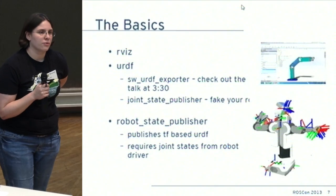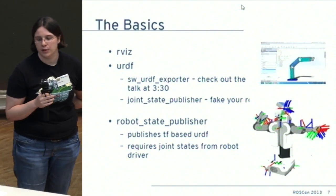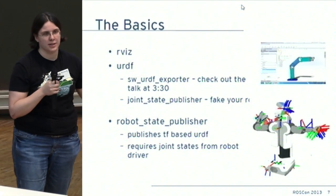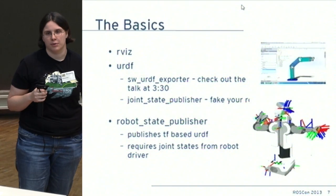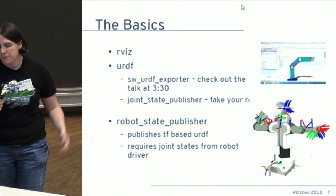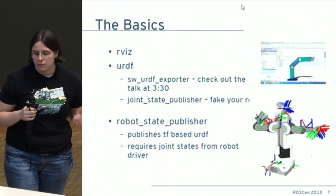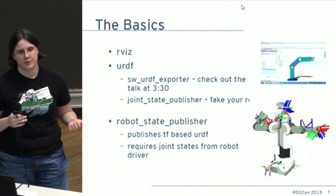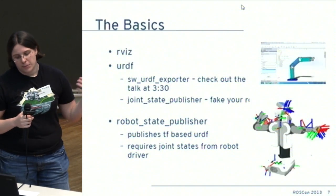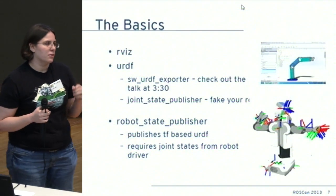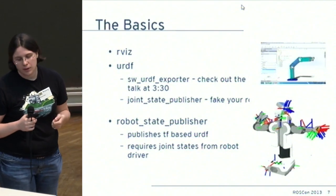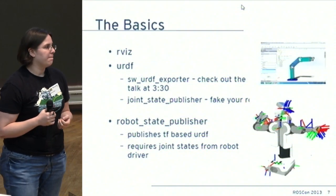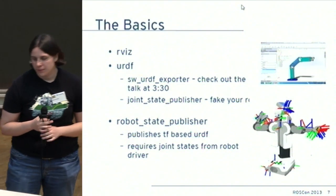joint_state_publisher is a really awesome tool for debugging URDFs — it lets you fake all the joints of your robot so you can move it around and get a sense of what's going on without needing your hardware up and running. robot_state_publisher takes in your URDF and generates your TF frames for you, and then all you have to do from your robot driver is publish joint states using the joint states message in ROS.